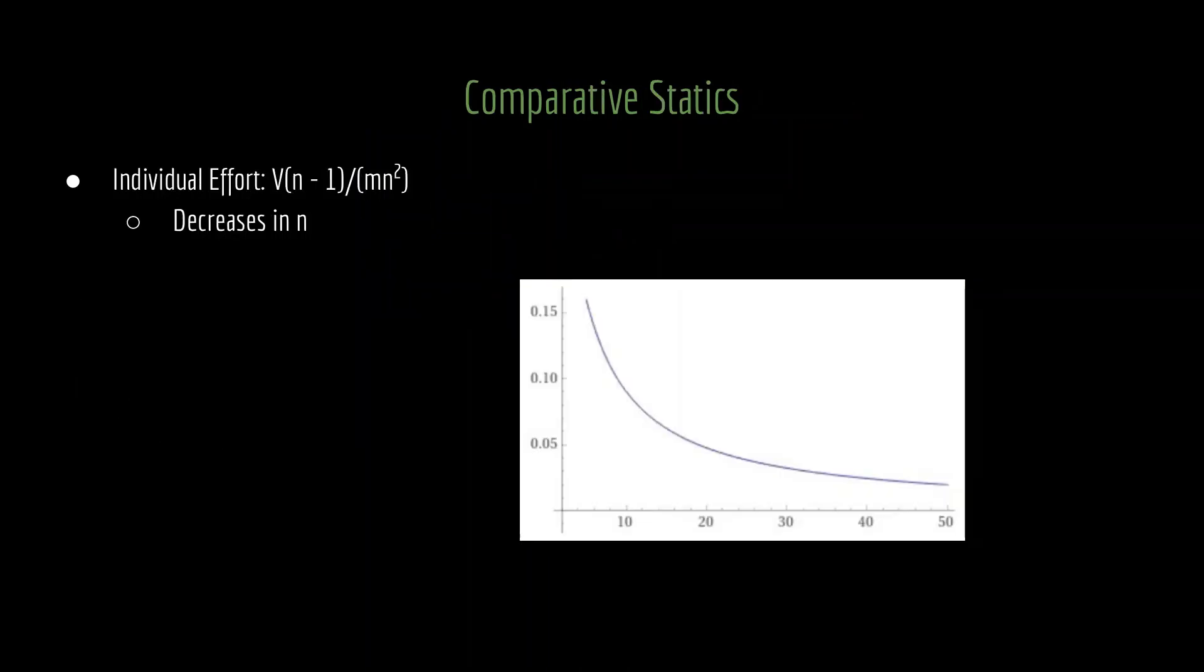There are a couple of comparative statics worth noting here. First, let's think about what happens to individual effort as we increase the number of groups. As it turns out, that effort is going to go down. In other words, if we're adding another group to the situation, then your amount of effort exerted will decrease. That's because you're expecting a larger overall share of effort to be spent with the additional group. And that means the marginal contribution of each unit of effort that you're spending is going to go down. And as a consequence, you are no longer as willing to spend as much as you were when there was one previous individual competing in the contest.